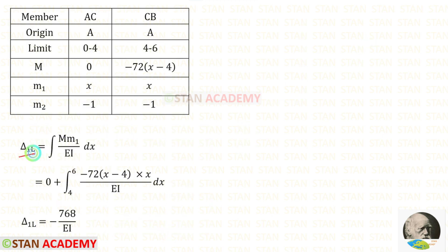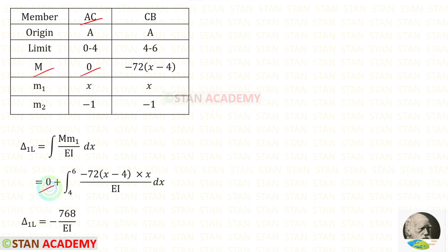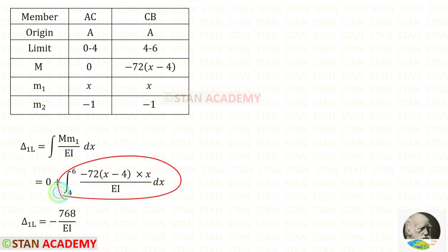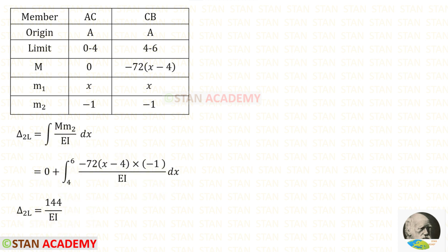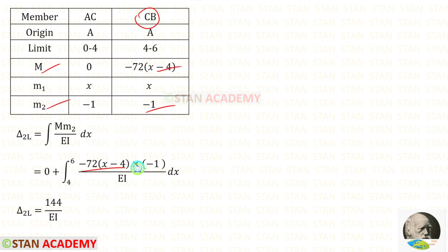Now let us find delta 1L using the formula: integration of M·M1 divided by EI dx. For member AC the value of M is 0, so we enter 0 directly. From member CB we apply the values of M and M1, with limits 4 to 6. After integrating we get delta 1L = -768 / EI. Now let us find delta 2L using the formula: integration of M·M2 divided by EI dx. Applying values from CB and integrating, we get delta 2L = 144 / EI.